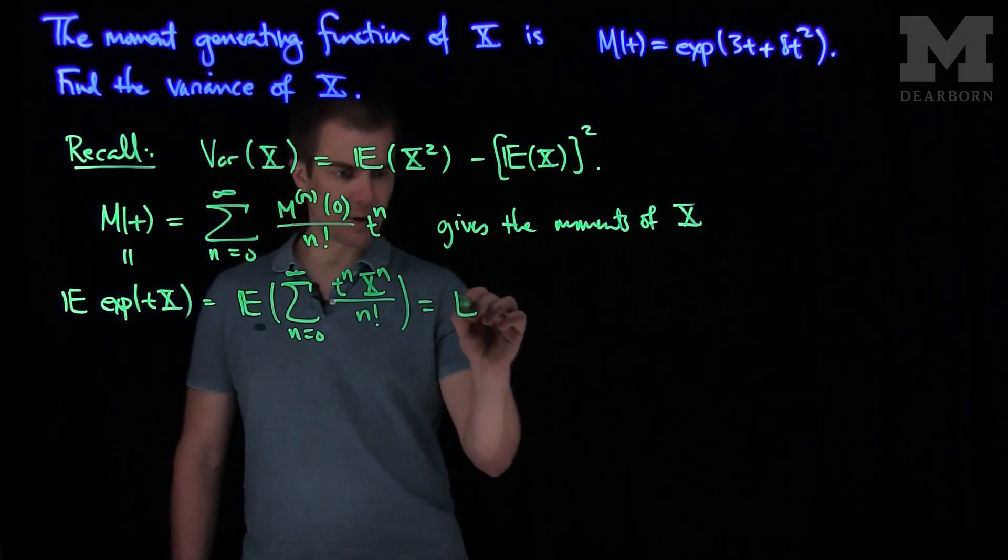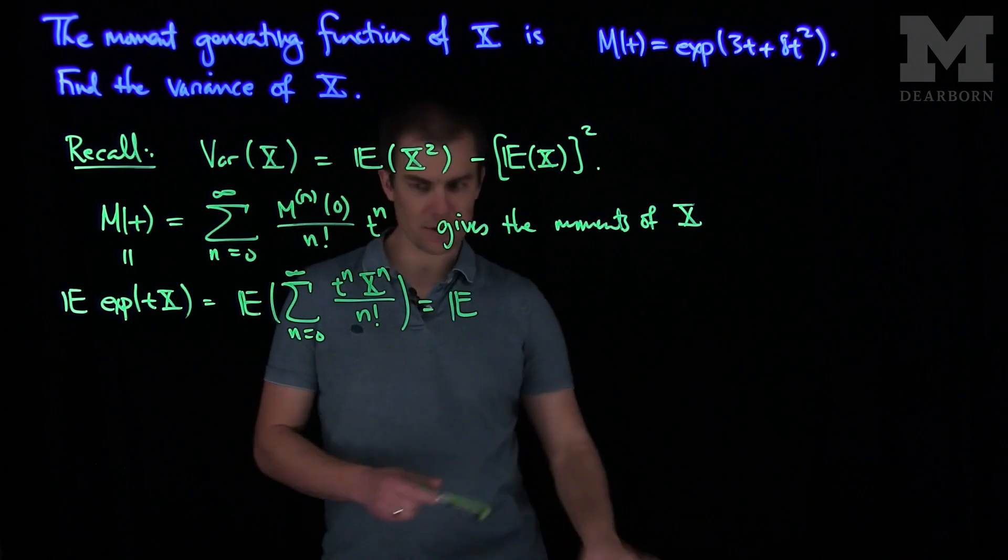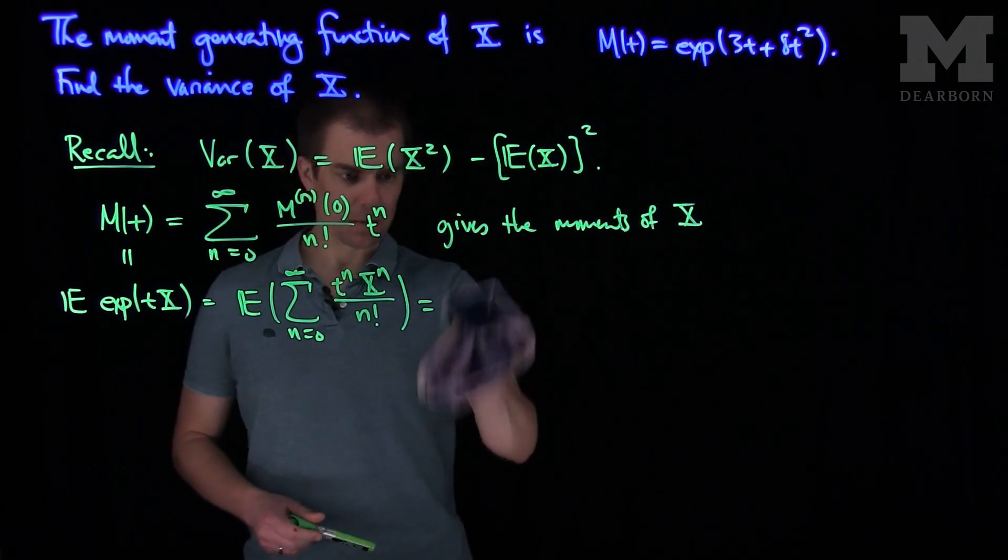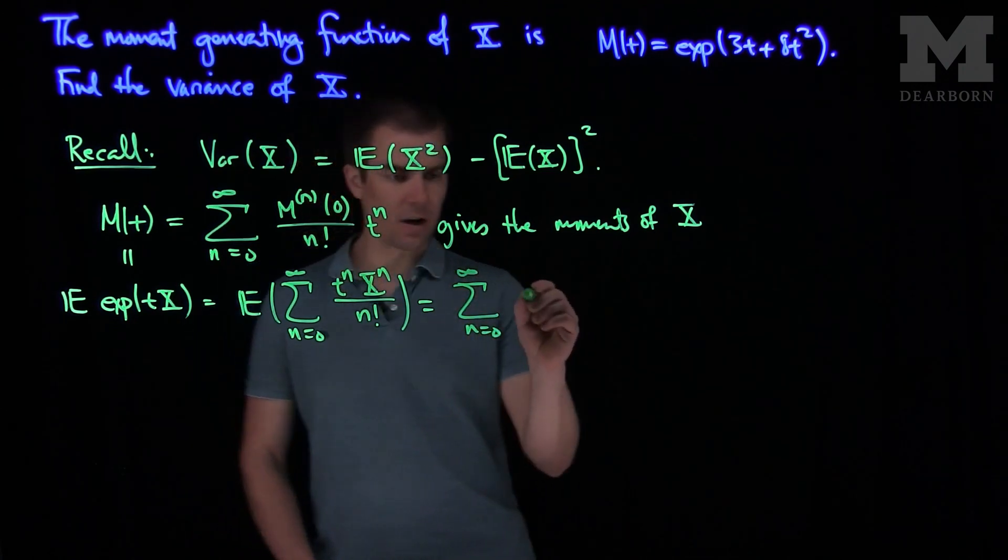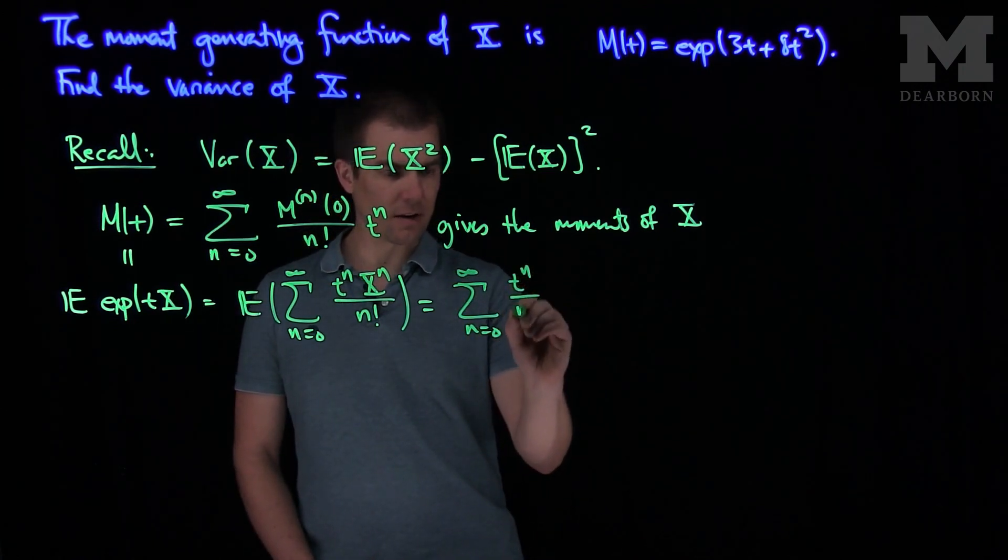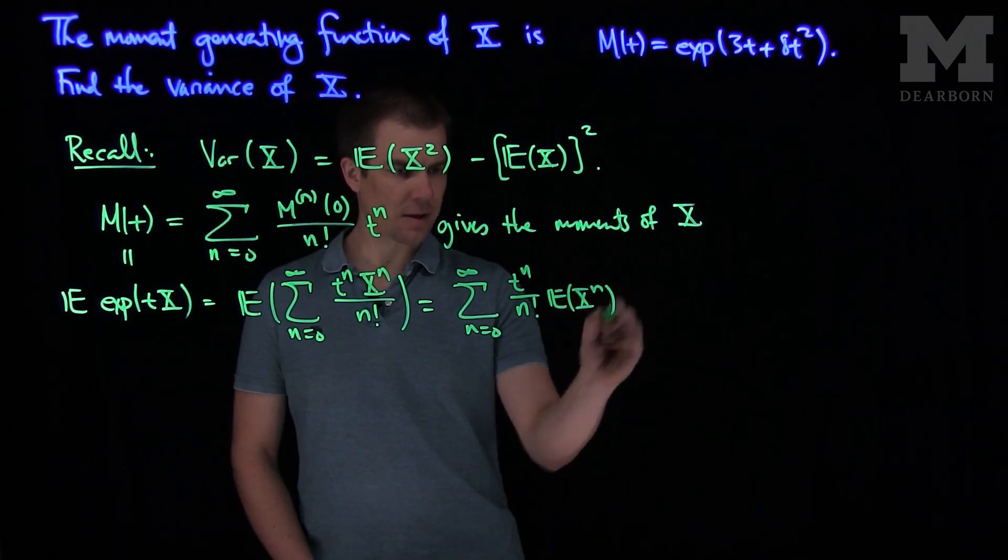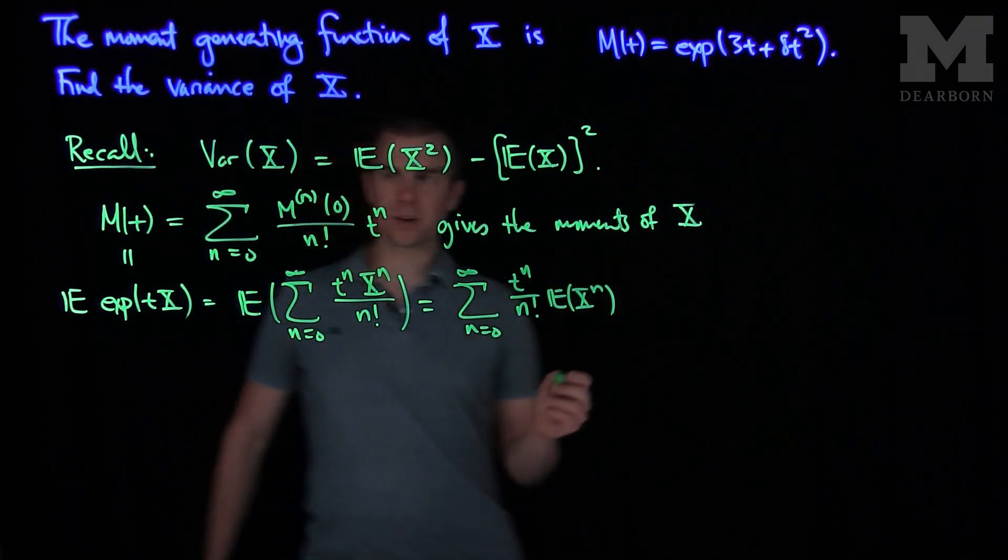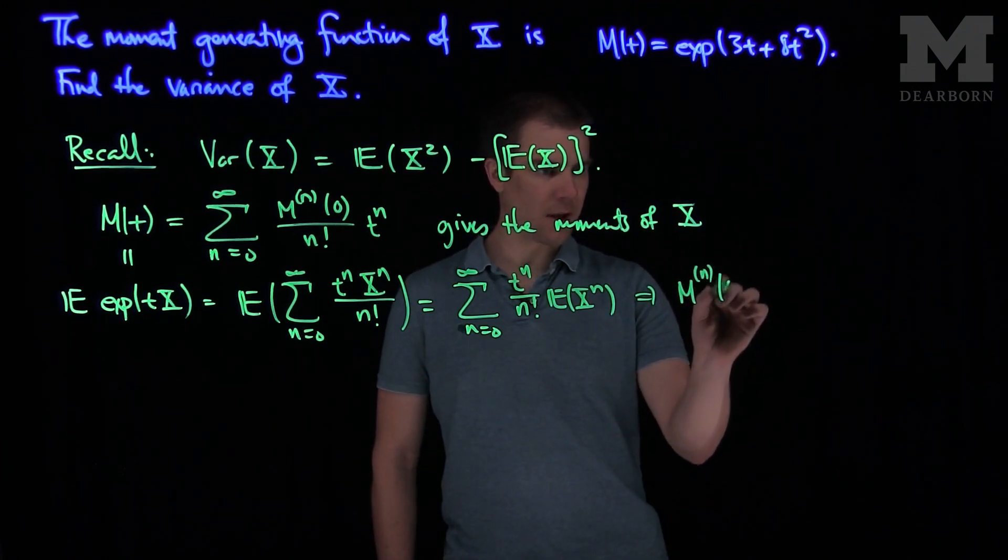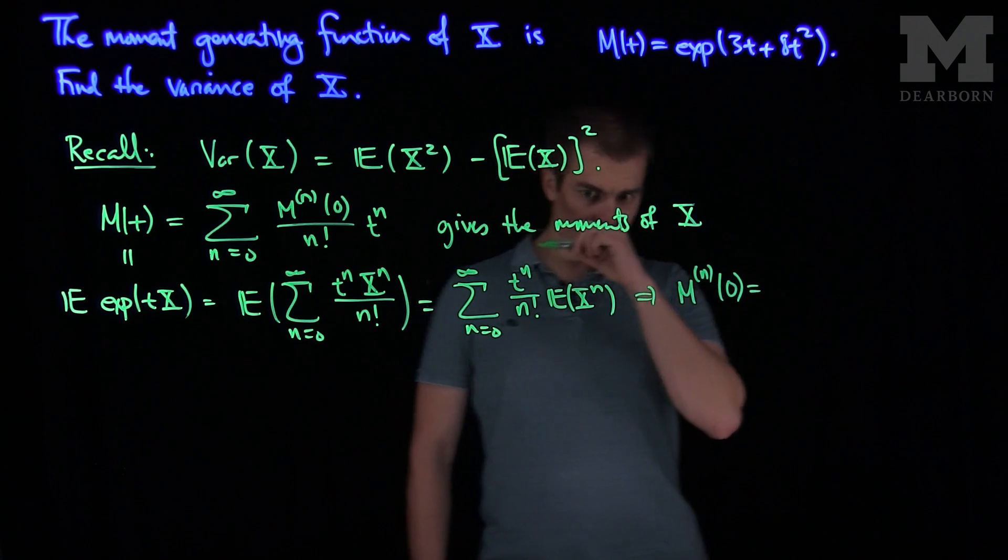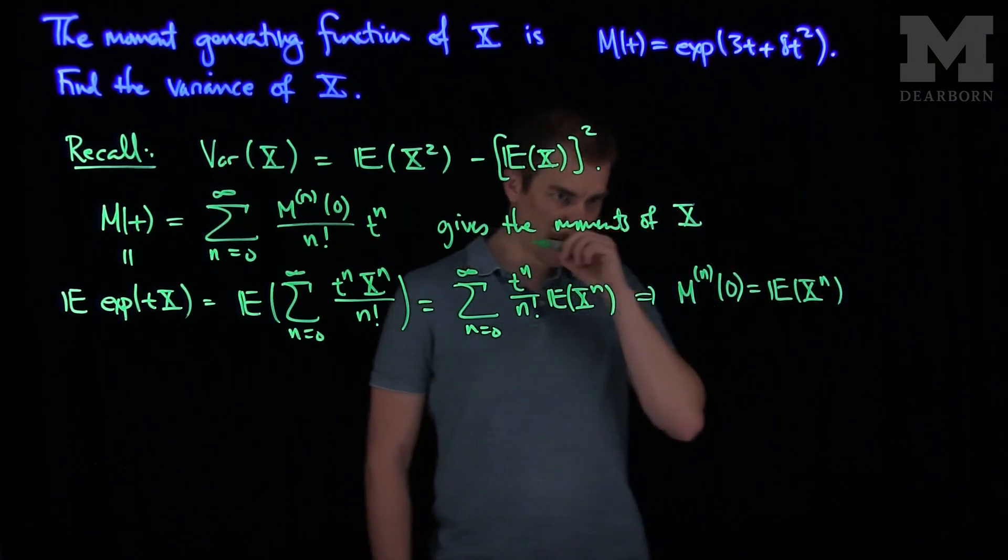And this becomes the sum from 0 to infinity of t to the n over n factorial times the expected value of X to the n. Comparing these expressions, we see that the nth derivative of M at the origin is exactly equal to the expected value of X to the n.